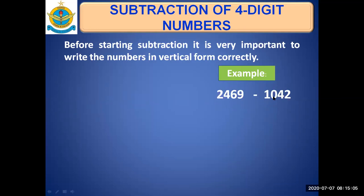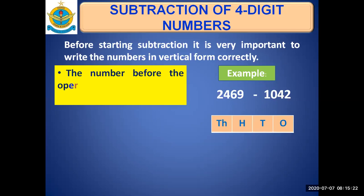2469 minus 1042. This is the sum that we need to do. First of all, we'll definitely write the place values so that we are now identifying in which column we have to write which digit. The number before the operation symbol, as we are doing subtraction here, before the subtraction symbol, the number that is circled is always written at the top. Whether you are doing addition, subtraction, or multiplication.